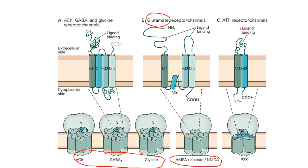The third group is ATP, which is a nucleotide, and it also has an ionotropic receptor called the P2X series. The P2X receptor is trimeric, and its subunit has two transmembrane domains, M1 and M2.